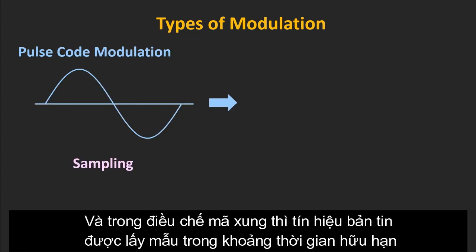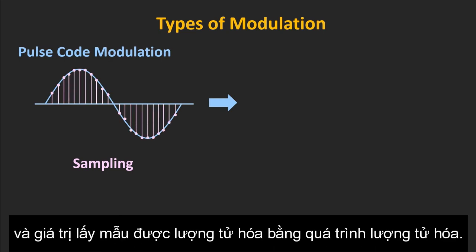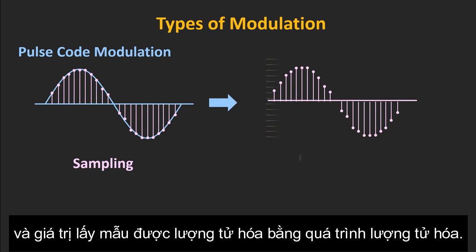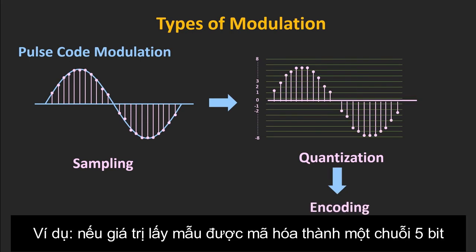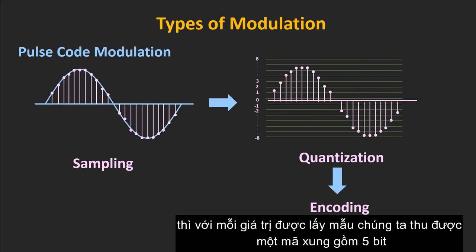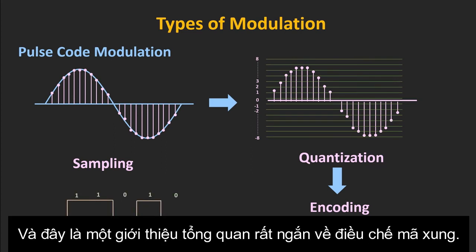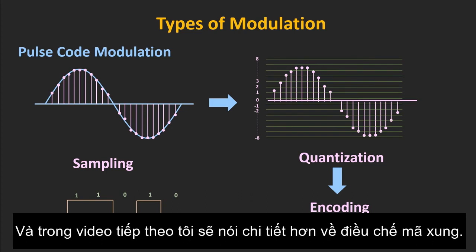In pulse code modulation, the message signal is sampled at finite intervals, and the sampled value is quantized using the quantization process. Then, using an analog-to-digital converter, the message signal is encoded. For example, if the sampled value is encoded in 5 bits, then for every sampled value we will get a pulse code of 5 bits. This is a brief overview of pulse code modulation, and future videos will cover it in detail.